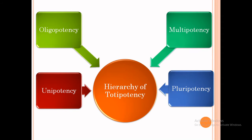Pluripotent stem cells can give rise to all cell types of the body but not the placenta. Compared to totipotent cells, pluripotent cells can only differentiate into embryonic cells, whereas totipotent cells differentiate into embryonic as well as extra-embryonic cells. Multipotent stem cells can develop into a limited number of cell types in a particular lineage, forming a particular part or organ. Oligopotency is the ability of progenitor cells to differentiate into a few cell types. Unipotent stem cells can differentiate along only one lineage.